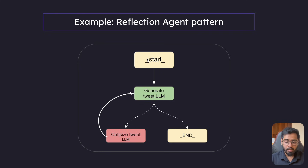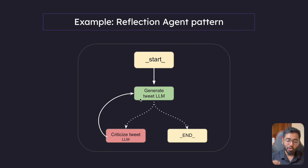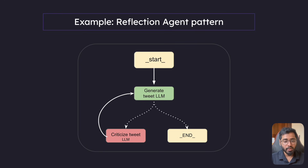Whenever a graph starts, we always have the start node. Right after the start node is executed, the control flow comes to the generate tweet LLM. Right after the tweet is generated, there are two different options: it can either go to the criticize tweet LLM, or it can end the process. If it goes to the criticize node, that LLM looks at the tweet generated and critiques it. This can loop several times to polish and iteratively improve the tweet. After a certain number of iterations specified by us as developers, instead of looping again it ends the process.